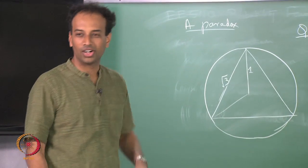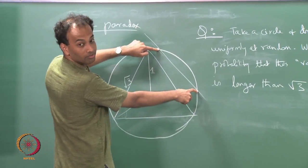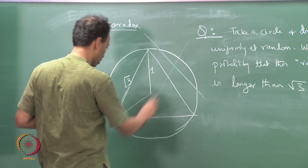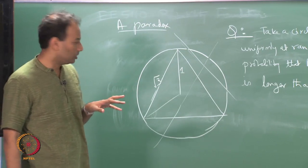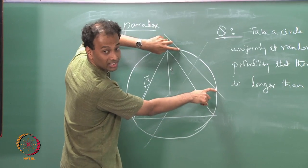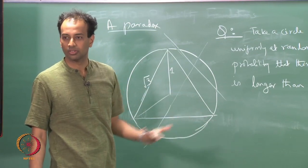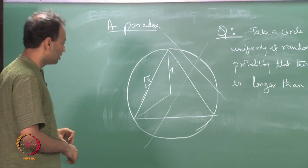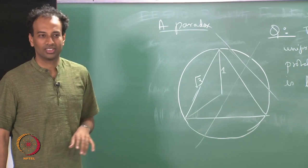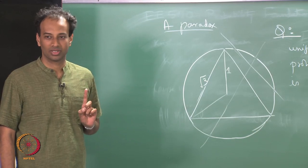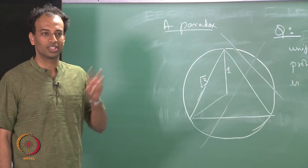You basically close your eyes and draw a chord. The chord may be oriented like this or like that, and in each case you have a length. If you pick a chord uniformly at random, what is the probability that its length is longer than √3, the side of the equilateral triangle? It turns out that depending on how you look at it, you get different answers. There are in fact three perfectly reasonable-sounding arguments which give three completely different answers.